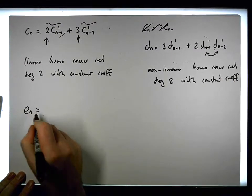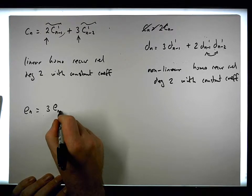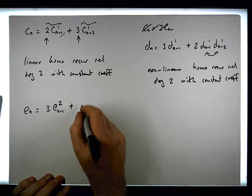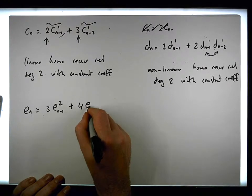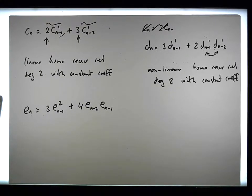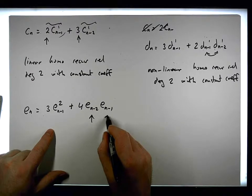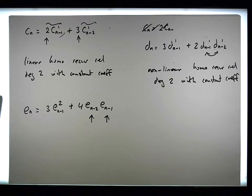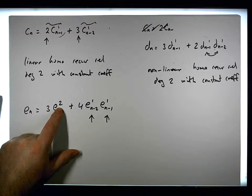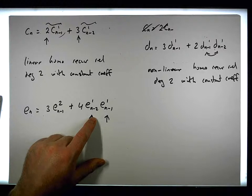Let's consider e(n) = 3·[e(n-1)]² + 4·e(n-2)·e(n-1). This is nonlinear because we have two terms wrapped up as a product within a term. It's not homogeneous because the powers are different, and it's of degree 2 since we go back two terms. It has constant coefficients.